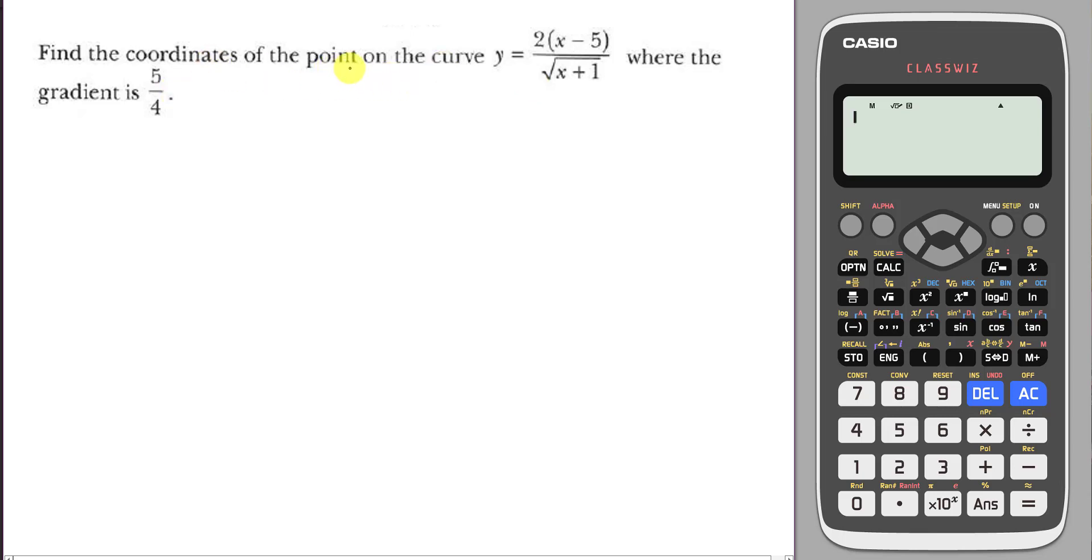They asked us to find the coordinates of the point on the curve where the gradient is 5 over 4. All of us know the gradient actually means dy/dx. That means when dy/dx equals to 5 over 4. When you see the equation like this, you already know you want to use the quotient rule.